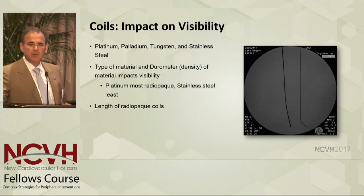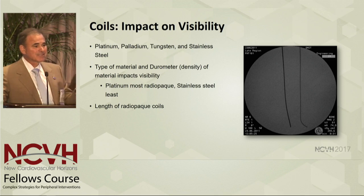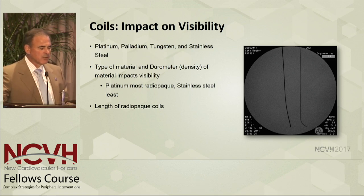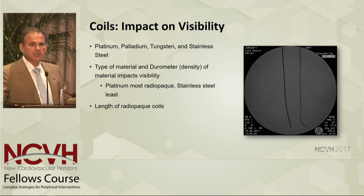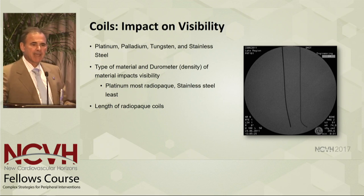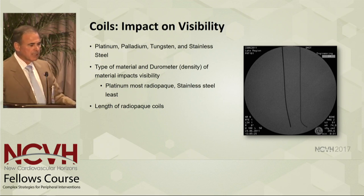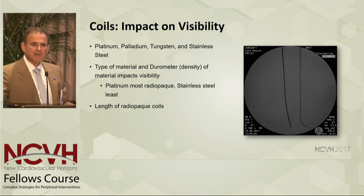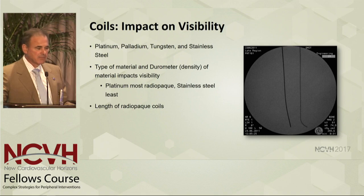We must see the wire, because in today's world we don't know what to do with a wire unless we see the tip — we've got to see the tip to steer it where we're going. To do that, we can use platinum, palladium, tungsten, or simply stainless steel. The thickness and type of material determines how well we see it, and the length of the radiopaque coils also helps. Platinum is the densest of these and gives us the best imaging.